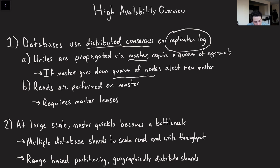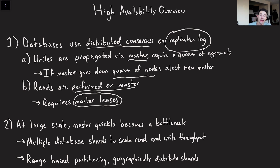Reads are going to be performed on the master node as well, which requires something called master leases — which I haven't spoken about too much on this channel, so this is a nice opportunity to dive into that. The problem is that any single master node is obviously going to become a bottleneck at massive scale. When it comes to scaling out writes, we typically have two options: allow writes on more master nodes, or partition things out and linearly scale throughput with the number of shards.